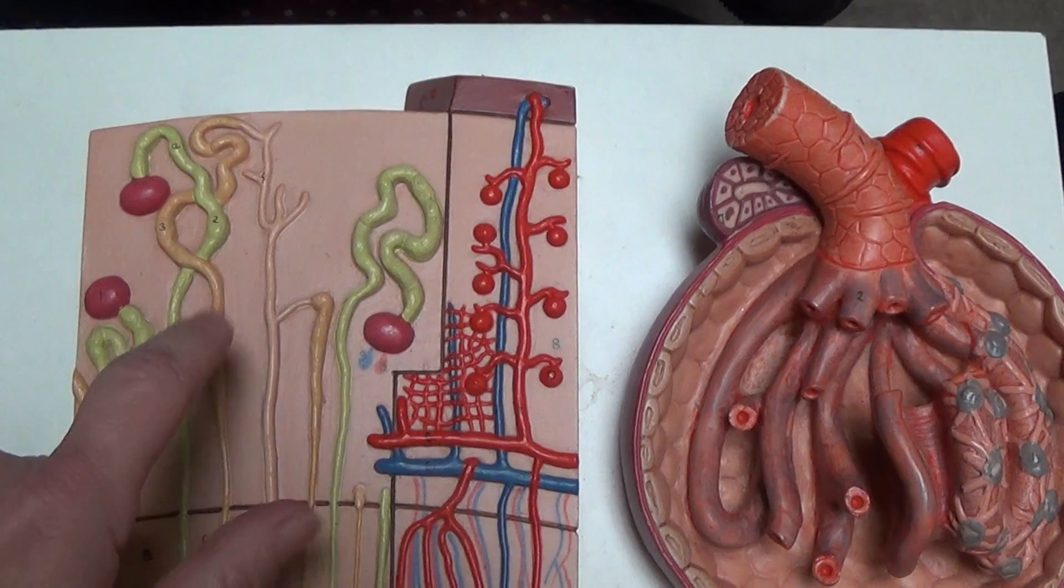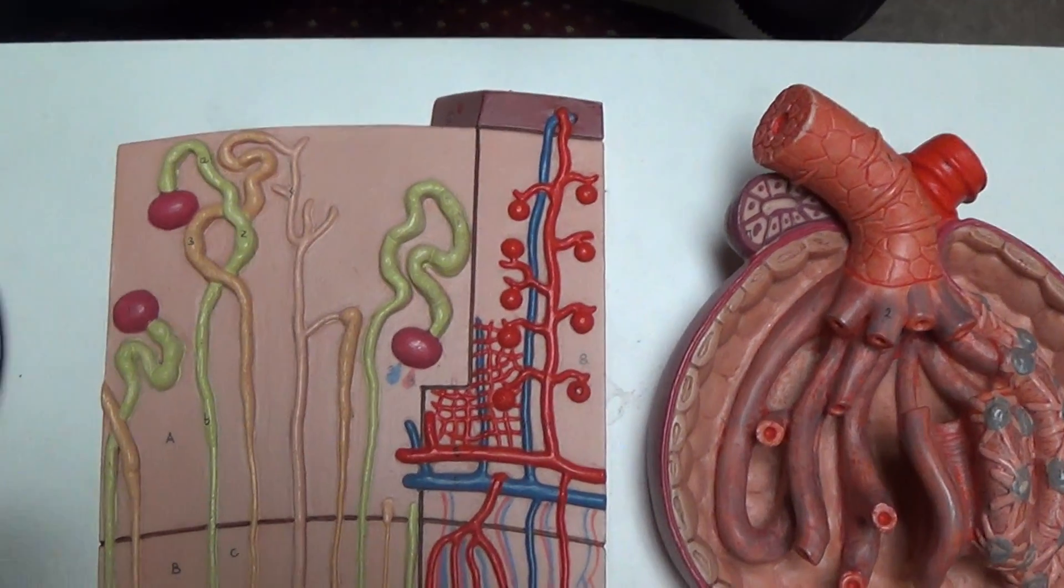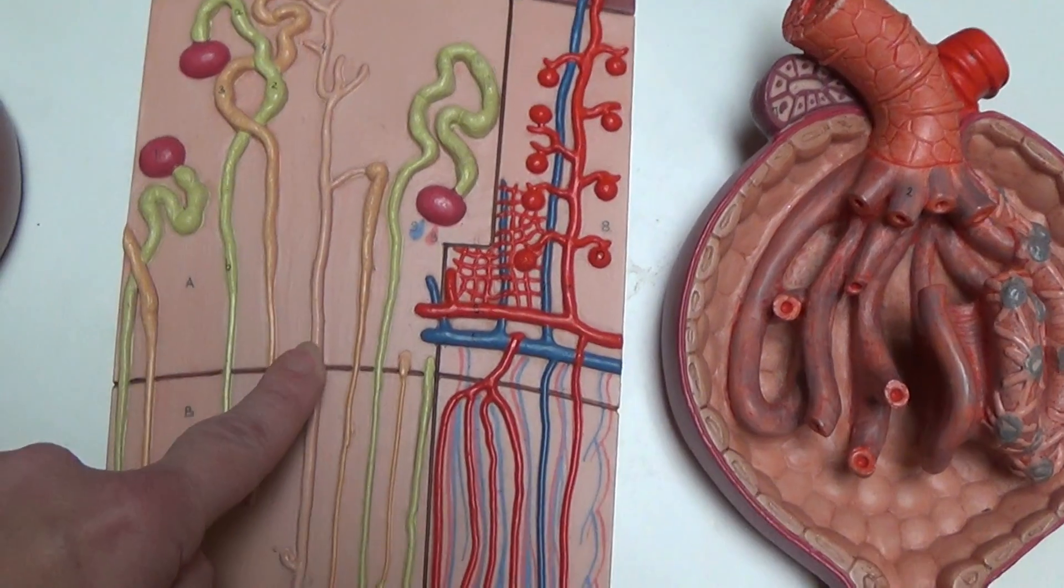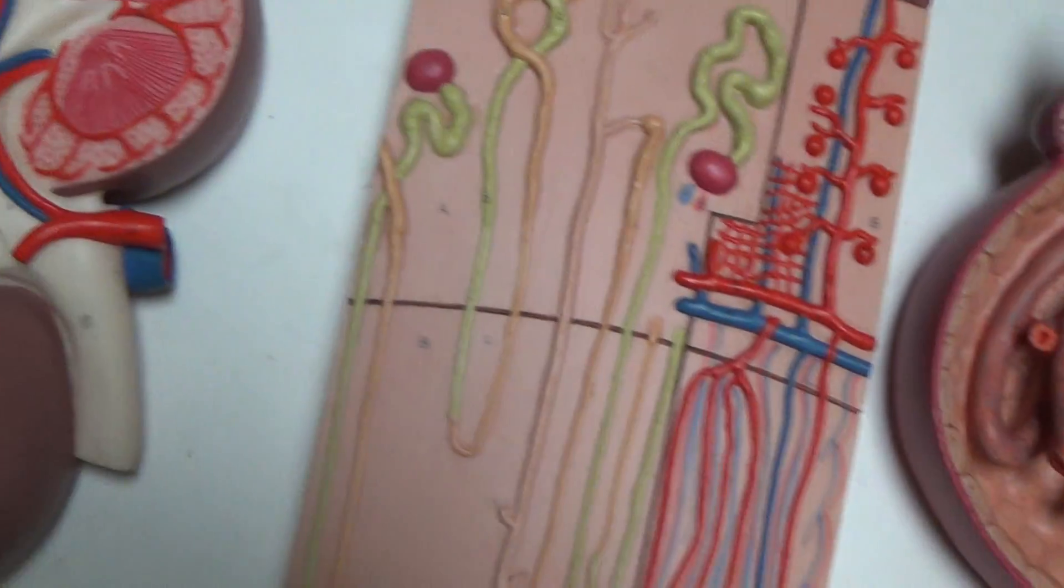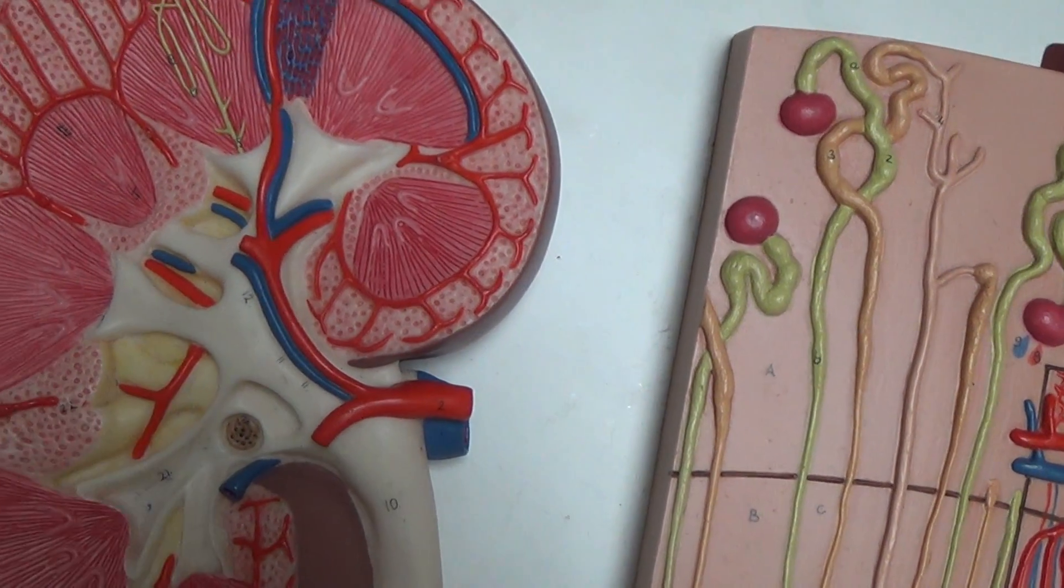The DCT, distal convoluted tubule, delivers what is now urine to this long line which is the collecting duct. And the collecting ducts help create the striped appearance that we see in the pyramids themselves.